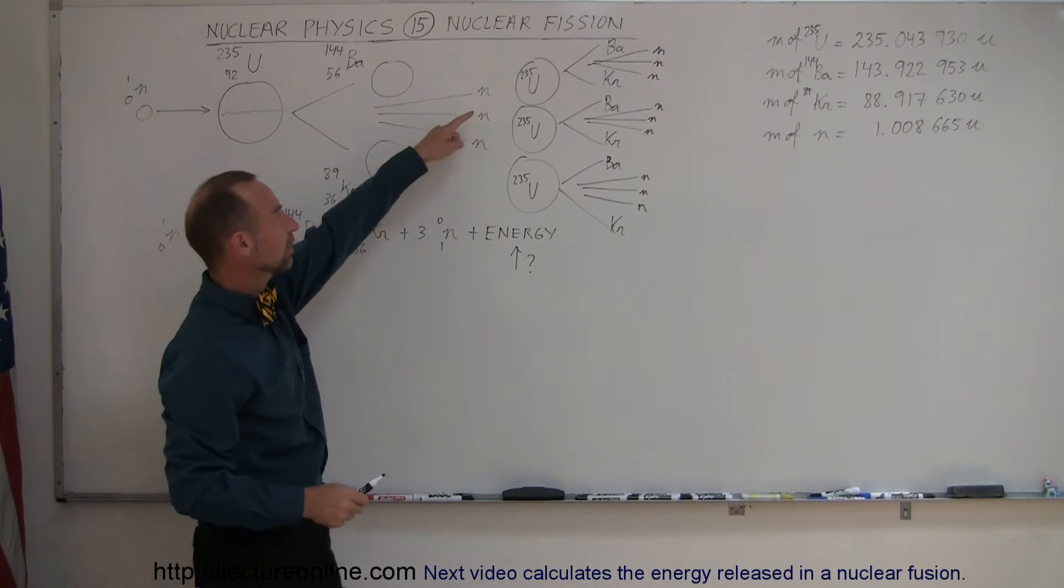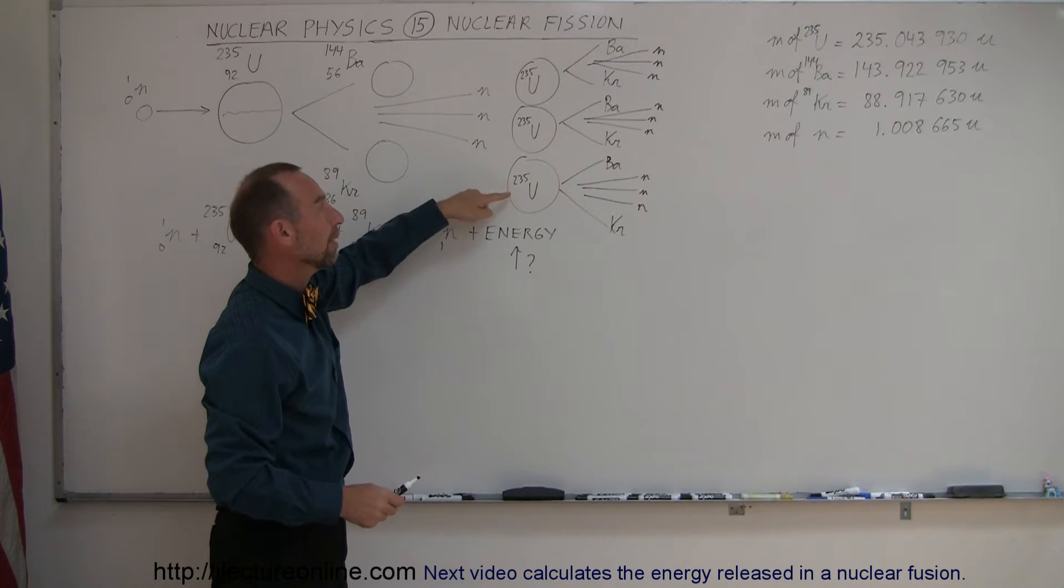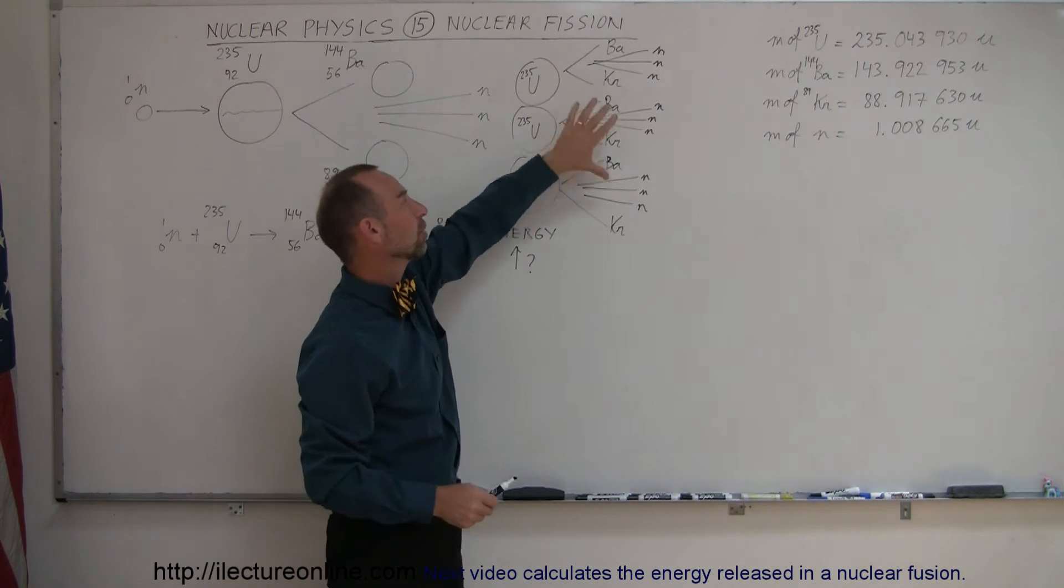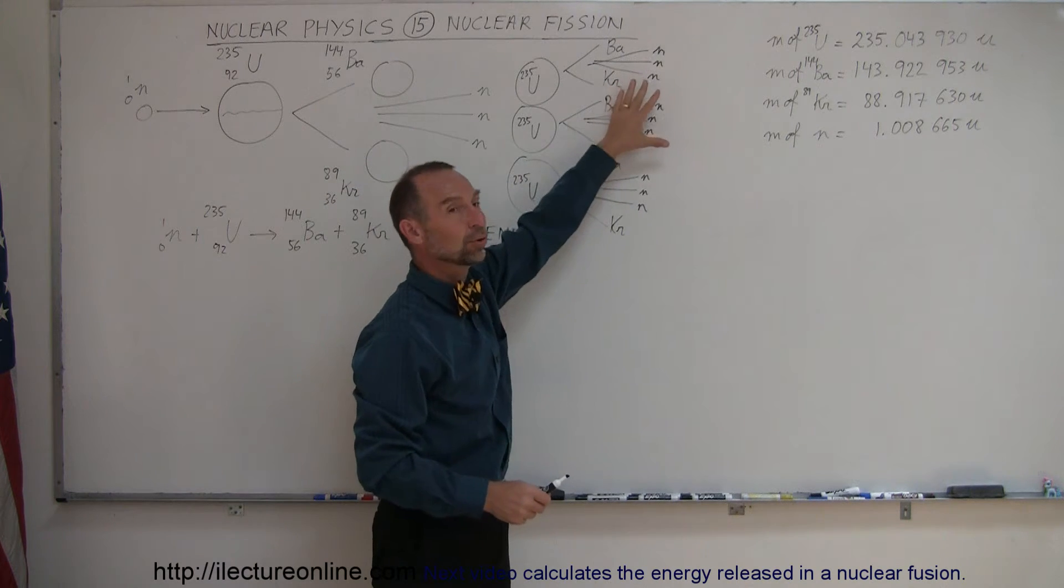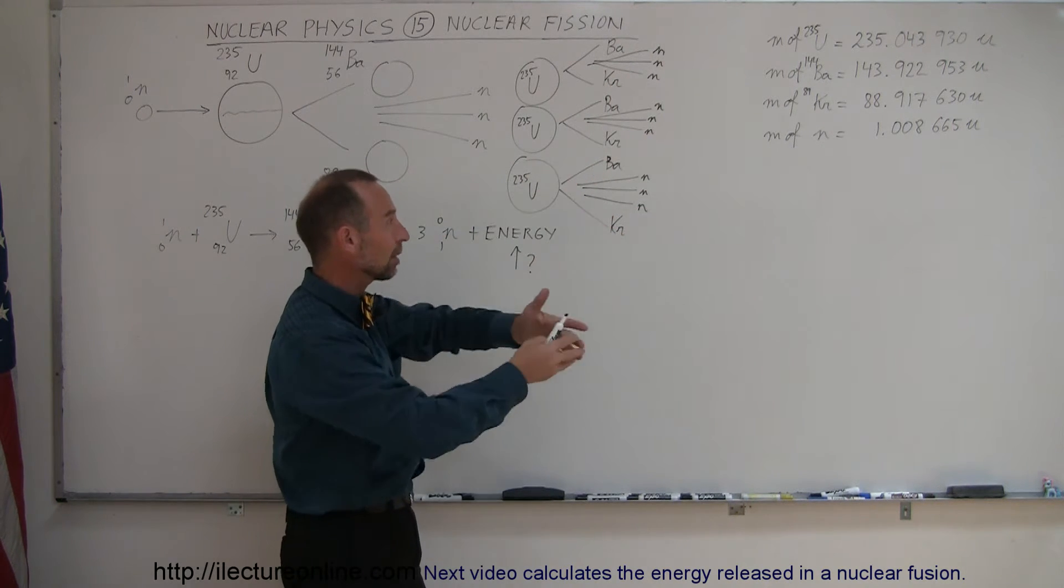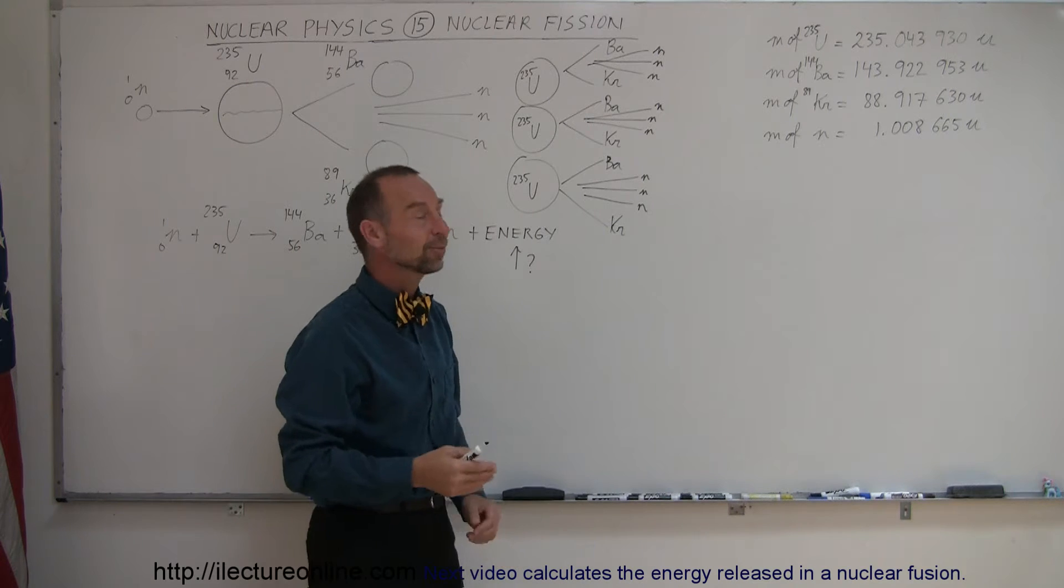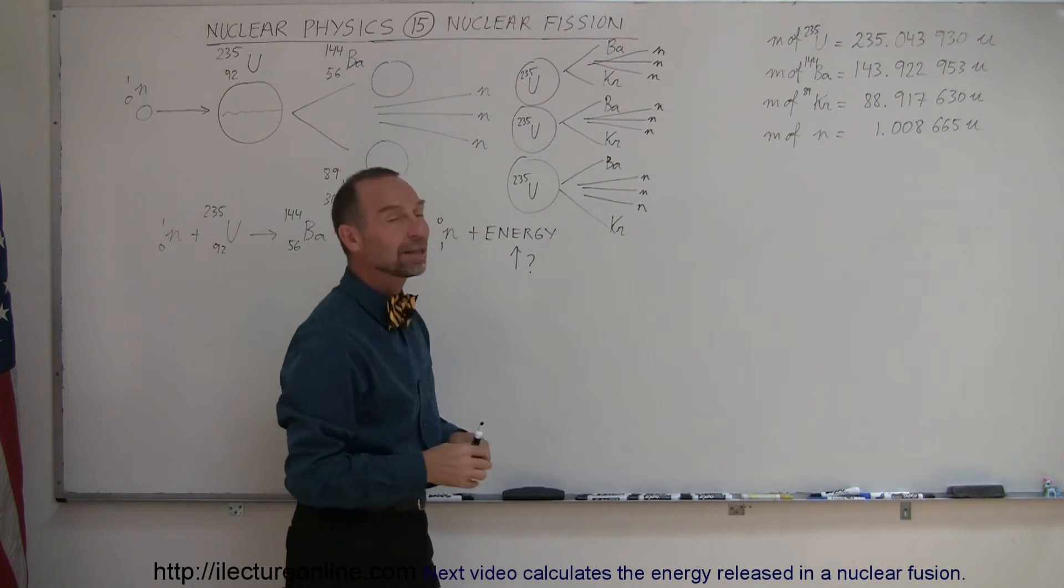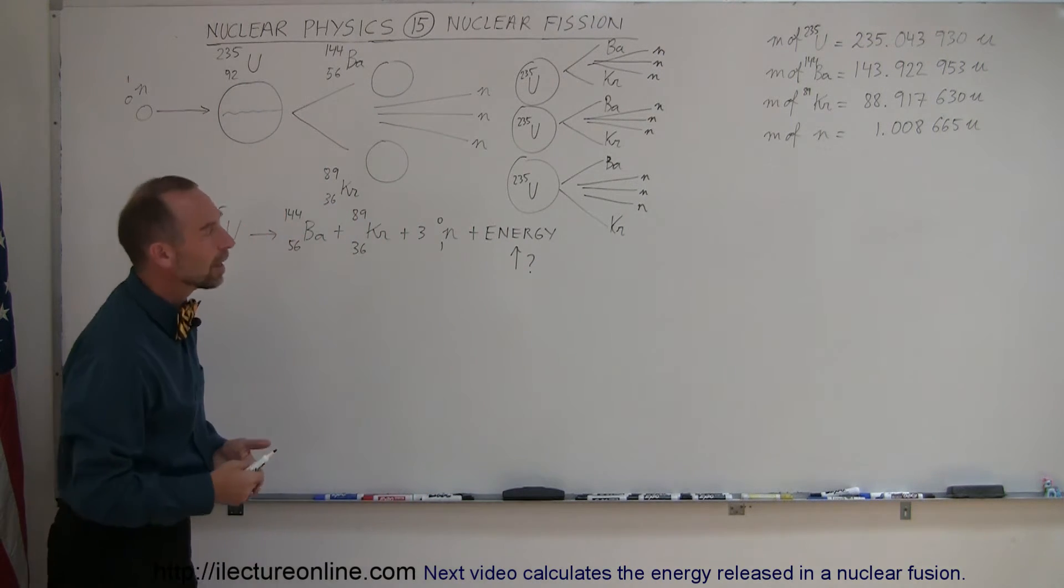If each of those neutrons hit another uranium-235, they will then split up into its daughter products, each releasing three more neutrons. Now you have nine neutrons. If they then go on and hit nine uranium-235 atoms, you can see it will very quickly mushroom, literally speaking.